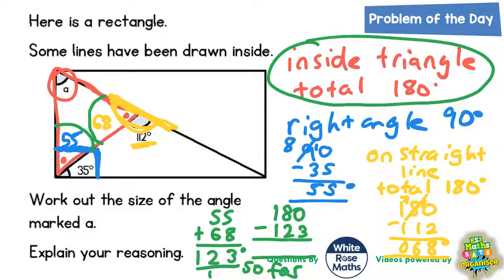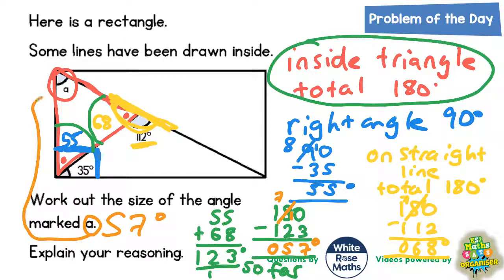So 0 take away 3 we can't do, so borrow. The 8 becomes a 7 and the one we've borrowed makes that 0 into 10. 10 take away 3 is 7, 7 take away 2 is 5, and 1 take away 1 is nothing. So it looks as though our final answer is 57 degrees. So that angle A there is 57 degrees. It's always a good idea whenever you've found a missing angle to go back to the diagram and actually write it on the diagram.